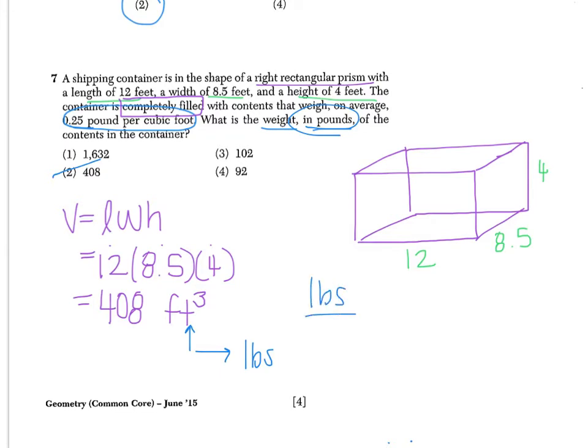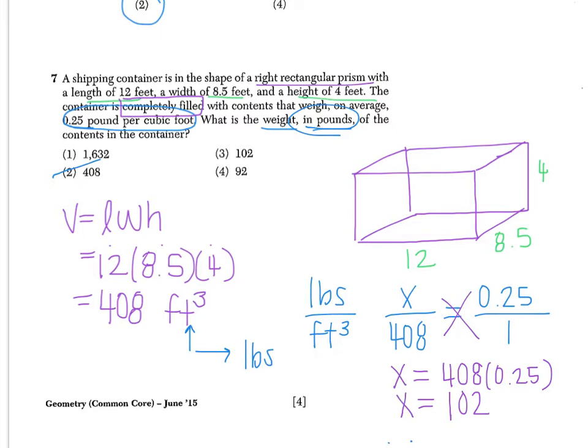And we can do this very easily by setting up a proportion. If we think about pounds over feet cubed, we'll be able to solve this easily. So now I know that I have x pounds to 408 cubic feet. Again, I'm trying to figure out how many pounds 408 cubic feet is, so I chose to call that x. Then I know that 0.25 pounds is per one cubic foot. When I have a proportion, I can cross multiply to solve. So I have x equals 408 times 0.25. When I type that into the calculator, I end up with 102. So now I know that 408 cubic feet is the same as 102 pounds. And because they asked for the answer in terms of pounds, our choice is 3.